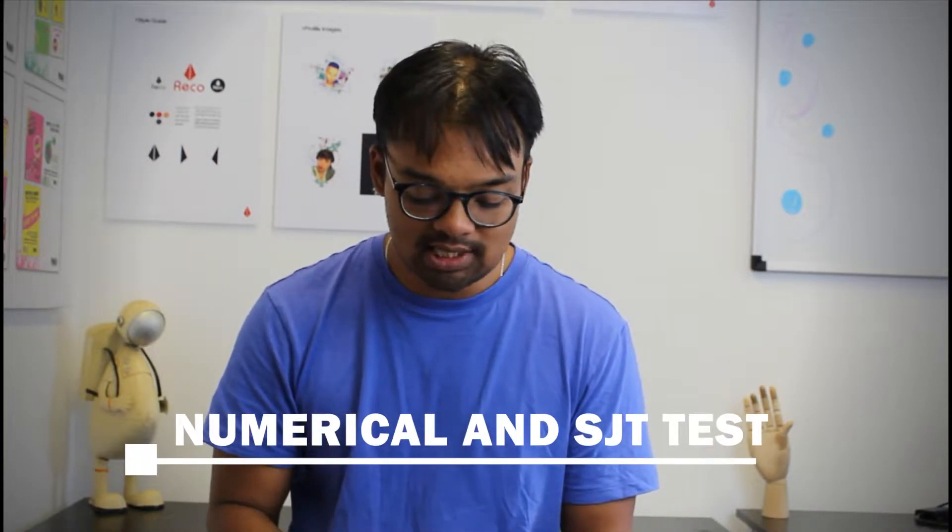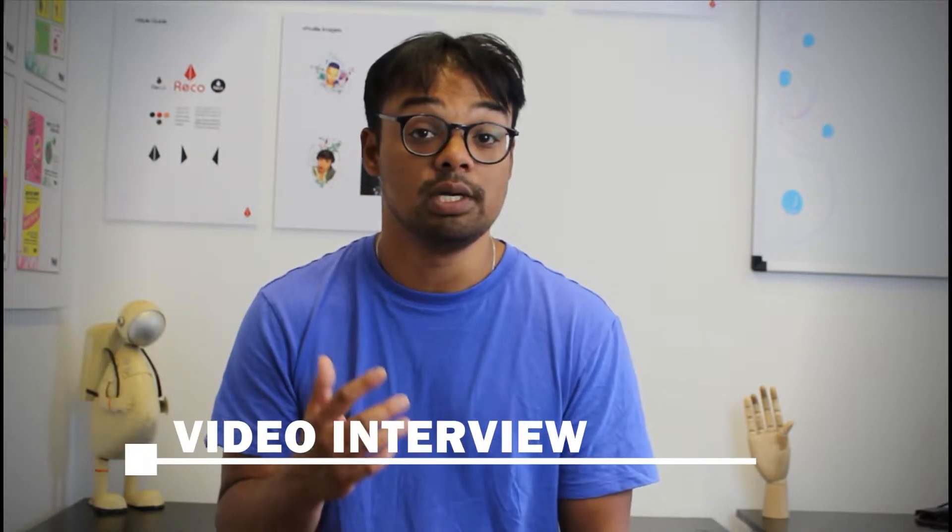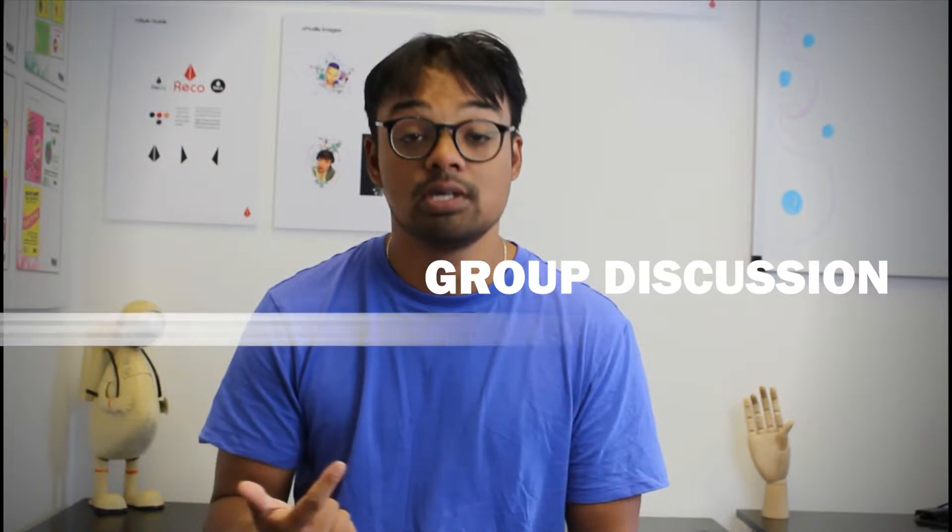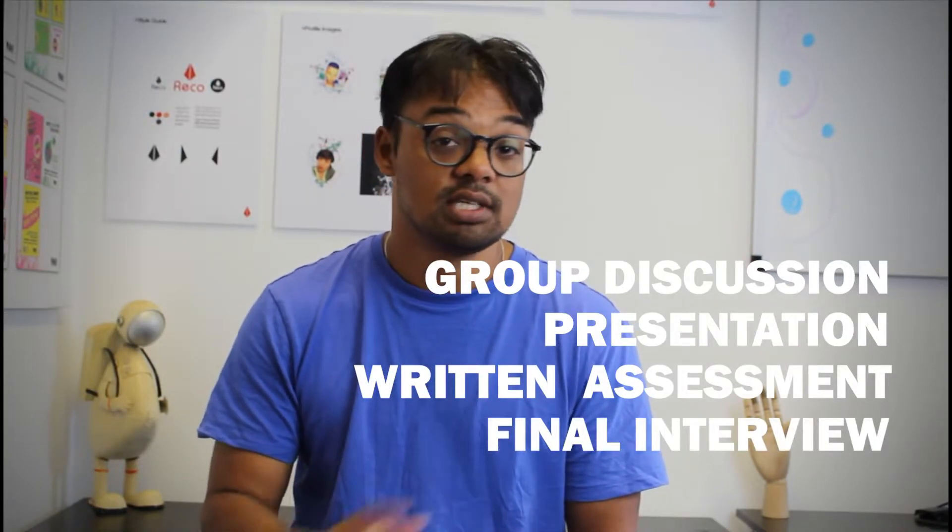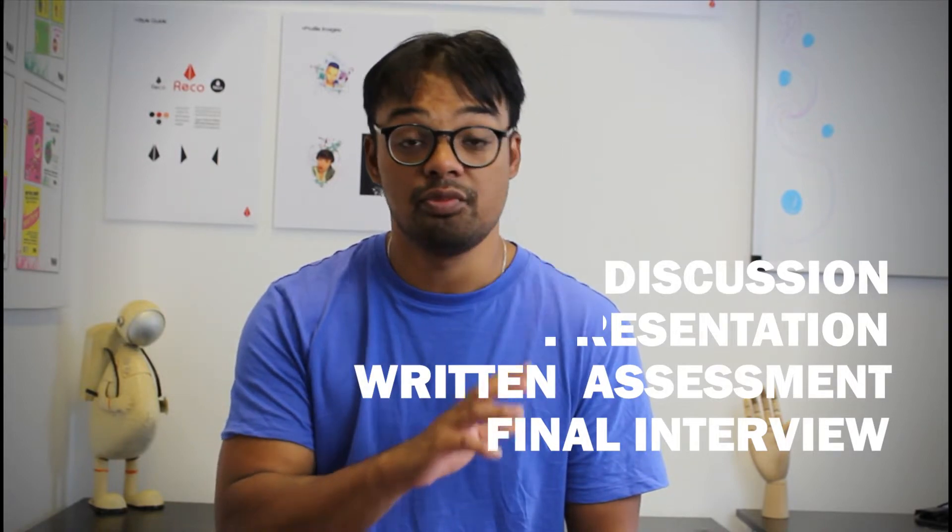Generally the whole process from submitting an application form to getting a job takes about two months to complete. You'll be asked to complete a numerical online test and an SJT test. You'll then be invited to a video interview where you'll be asked seven questions. You'll be given about two minutes to answer each question. For the assessment center there are four tasks: a group discussion, a presentation, a written assessment, and a final interview.